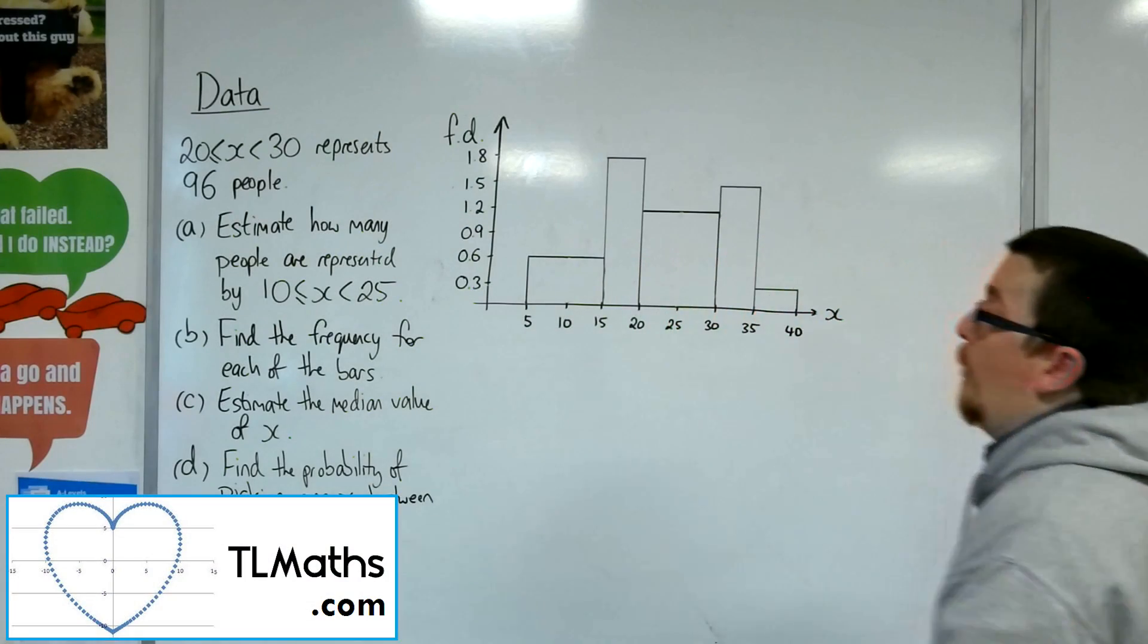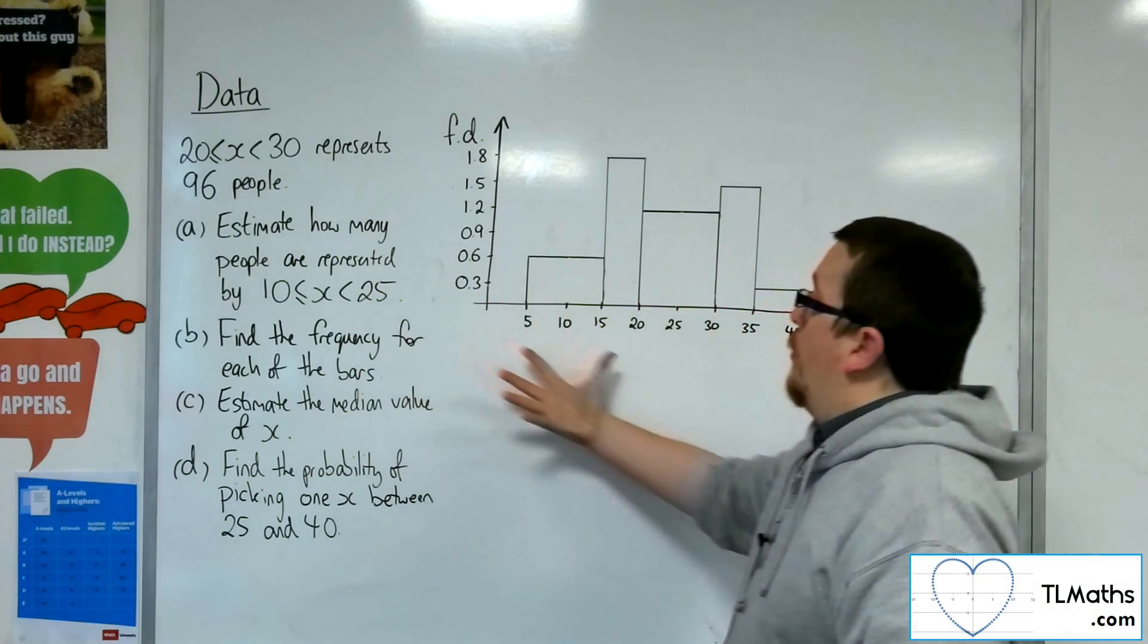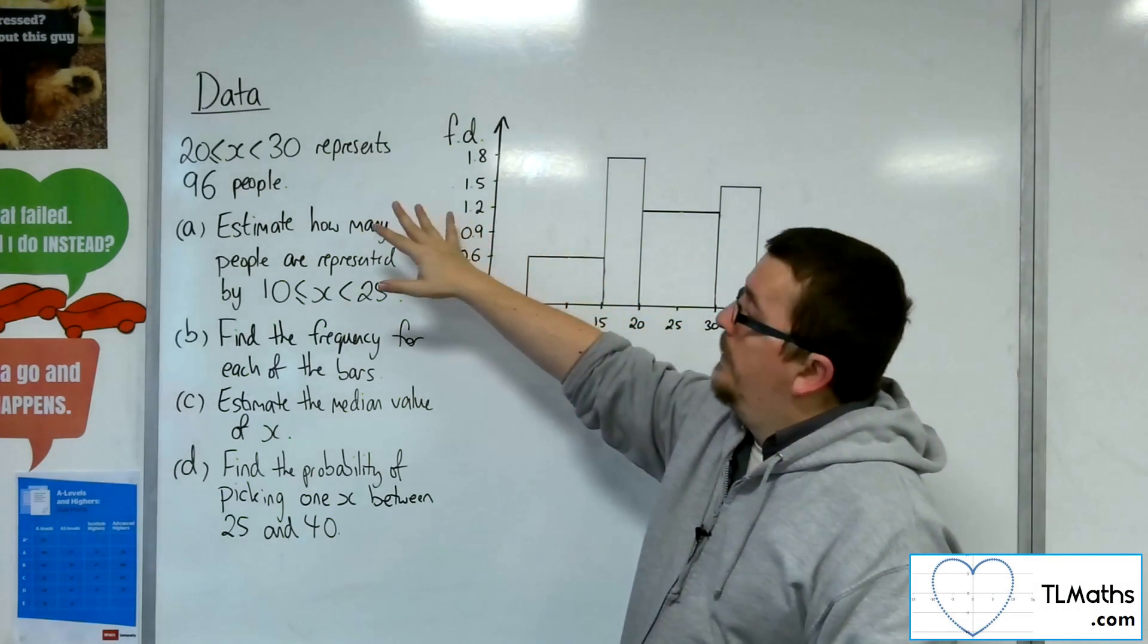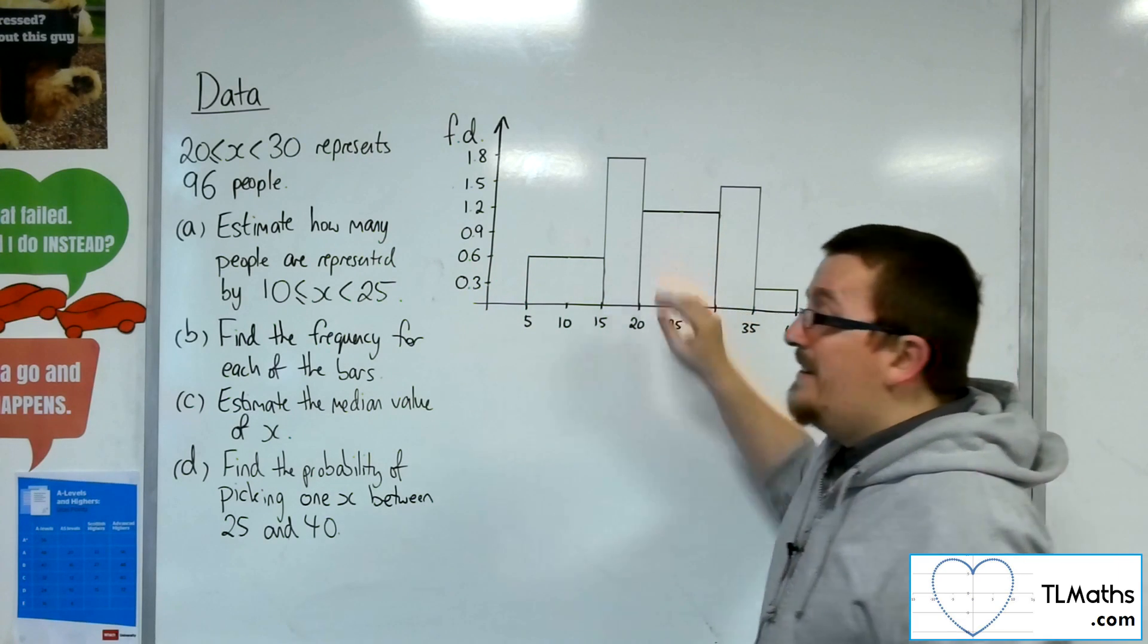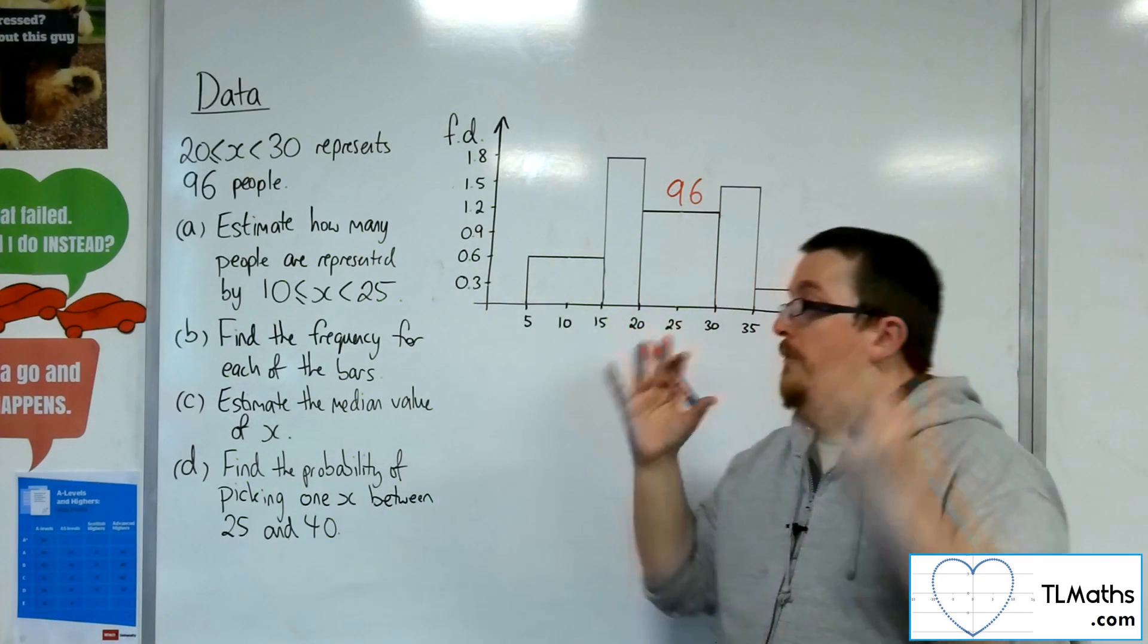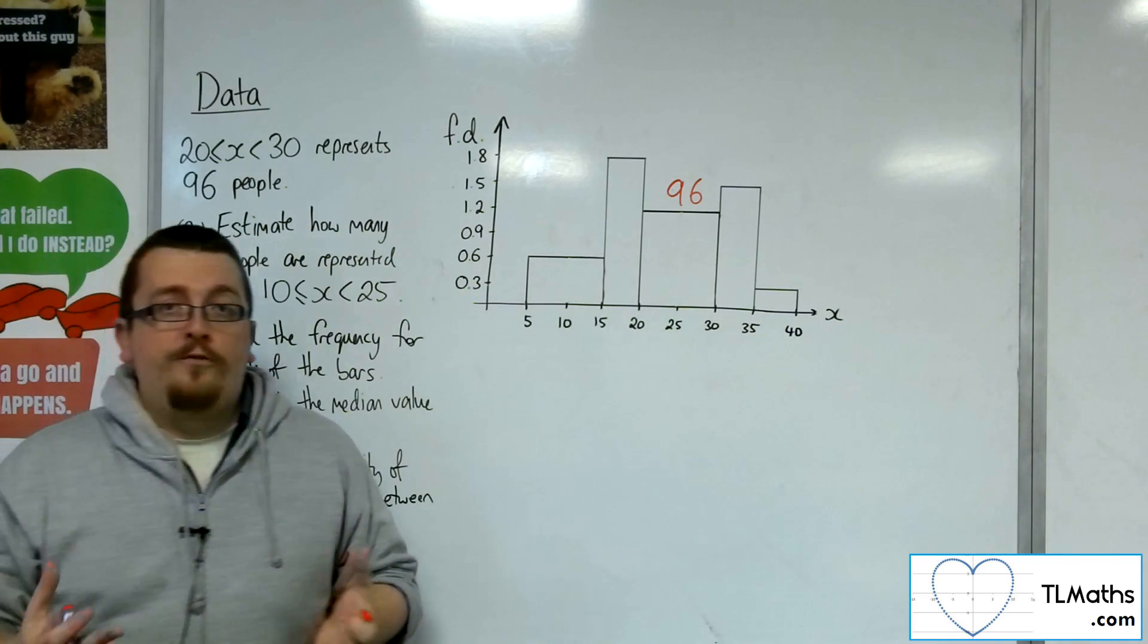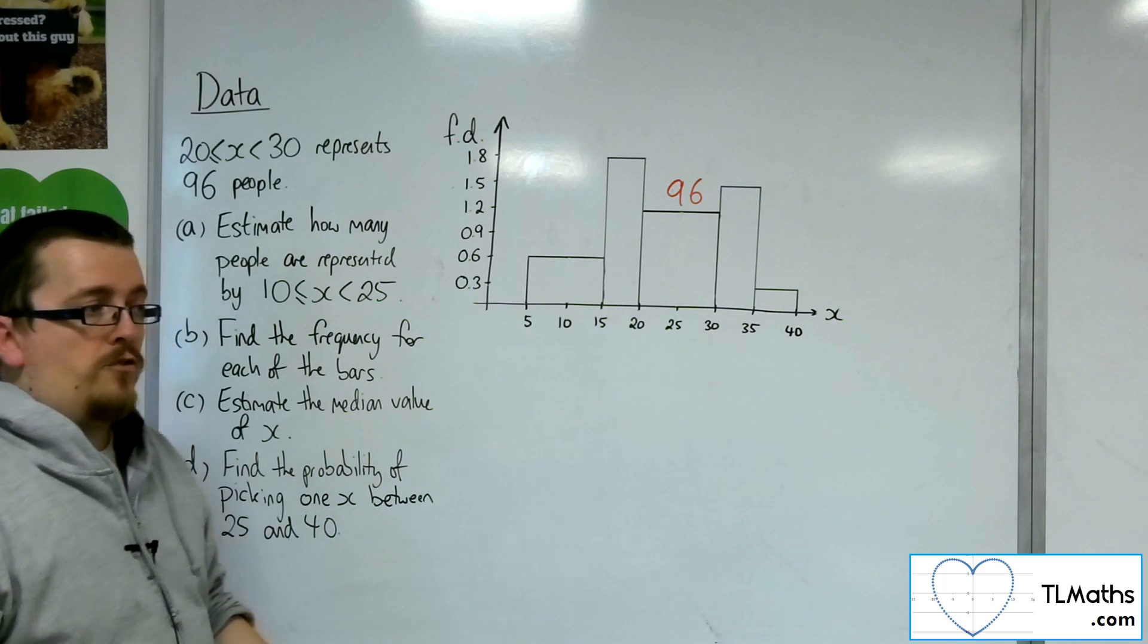Okay, so in this video, we are going to look at a histogram problem. What I've got here is a histogram already drawn. I've been told a little bit of information that the 20 to 30 block represents 96 people. So let's pop that on first. Now, before we start answering any of the questions, hopefully these questions should iron out any of the problems that we have with histograms.